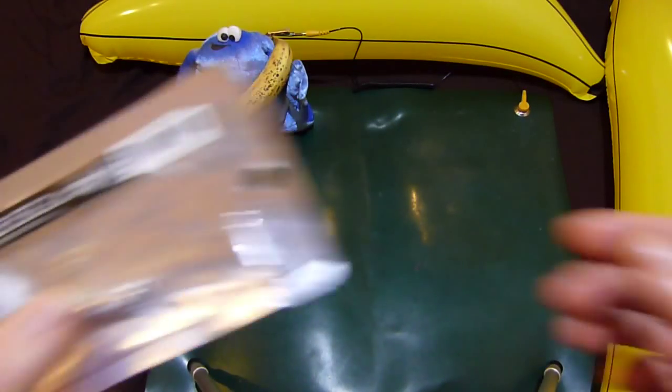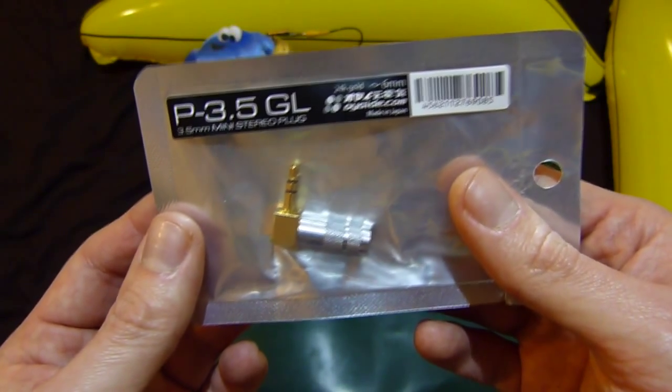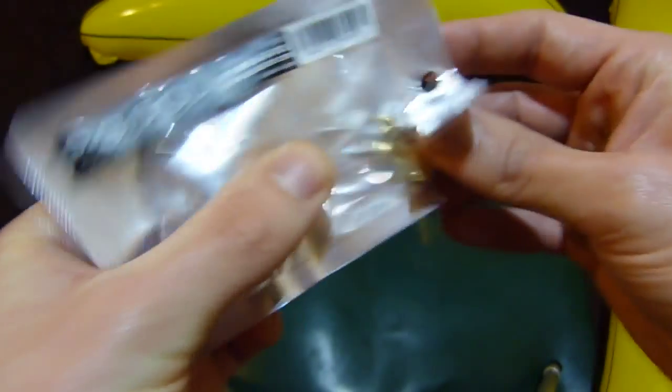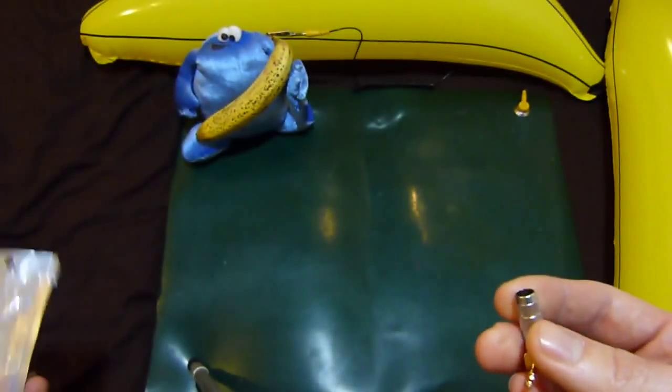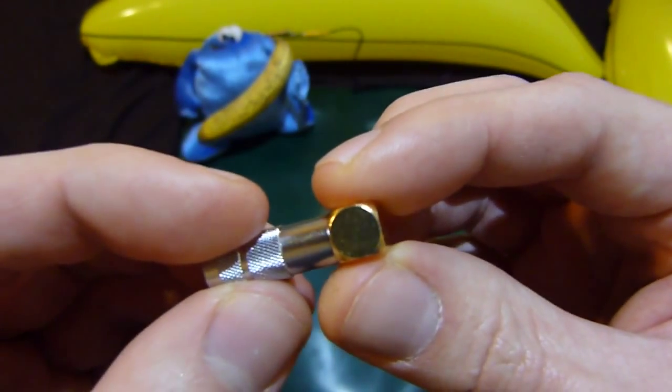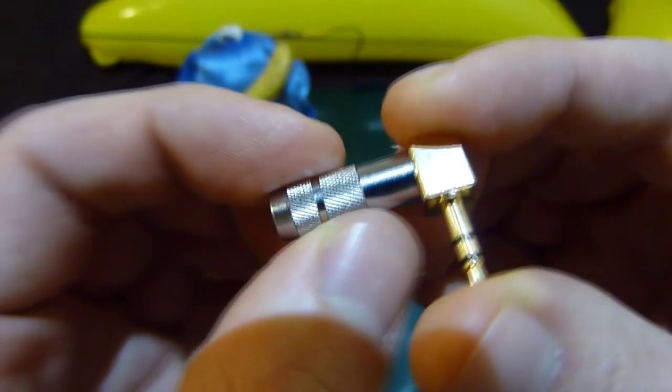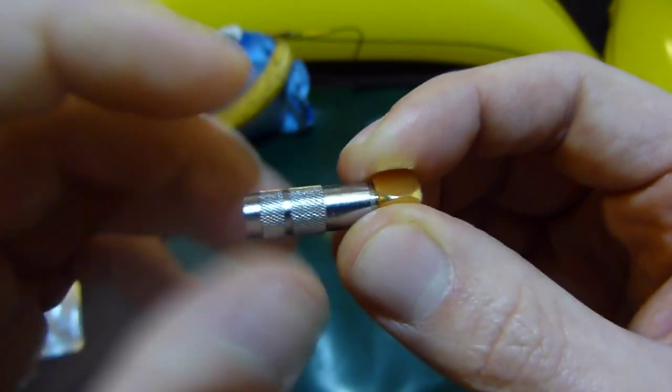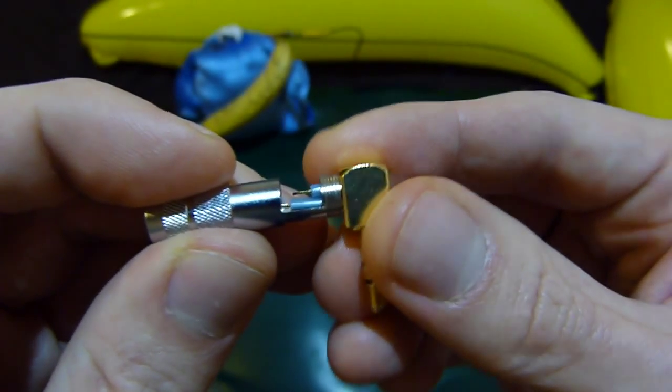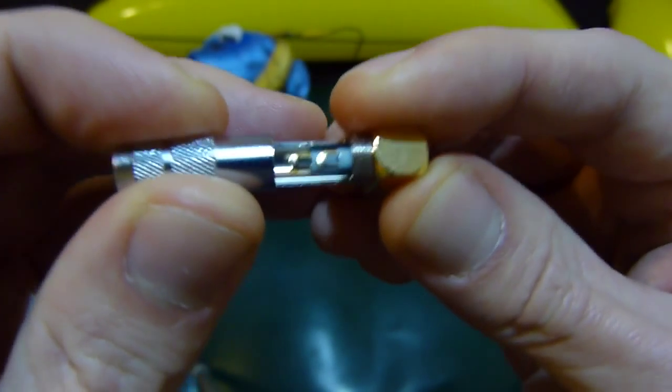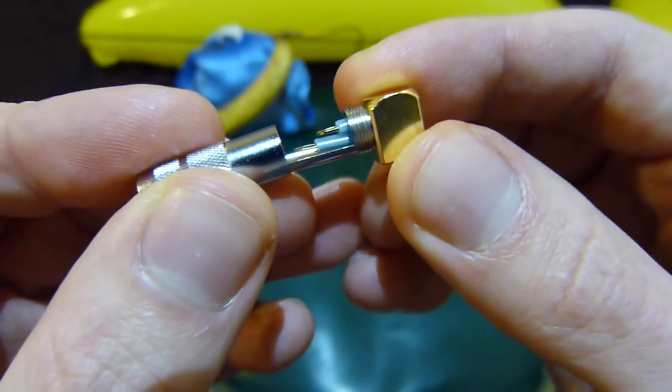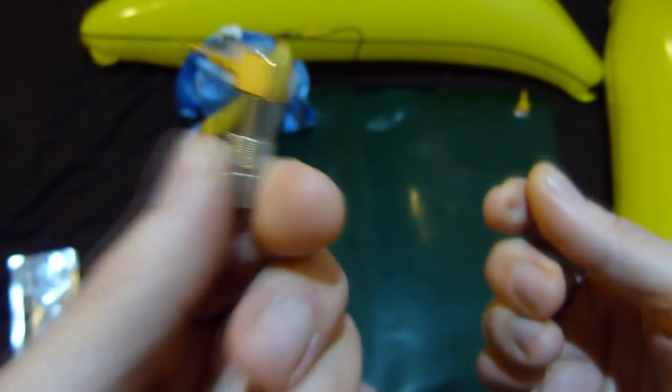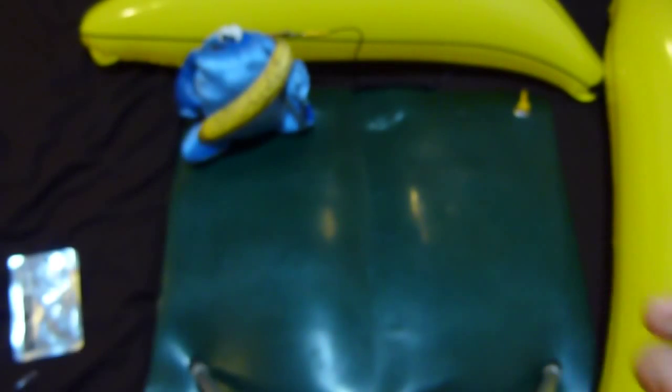What we've got is a 3.5mm 24 karat gold jack from Oyaid. Hopefully I'm saying that correct. And if not, who cares? So, it comes in a fancy space-age packet like that. And it really is quite a beautiful connector. Everything's been machine-turned and some really positive knurling on the sleeve of the jack. And it's got some nicely defined pins in there, which we'll be using some high-quality silver solder to hook up to our beryllium copper cable. It's a nice shape as well, just a lovely piece of equipment.